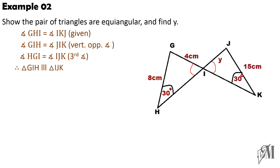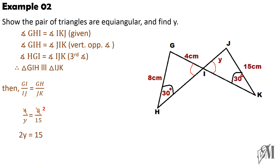We write GI over IJ equals GH over JK. Substituting values gives 4 over Y equals 8 over 15. Since 4 divides into 8 twice, this simplifies to 2 over Y equals 1 over 15 — wait, cross multiplying directly gives 2Y equals 15, so Y equals 7.5 centimeters. This is how you simplify a question of this sort.